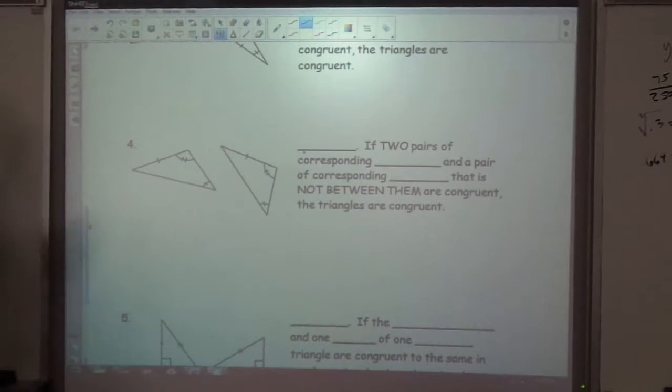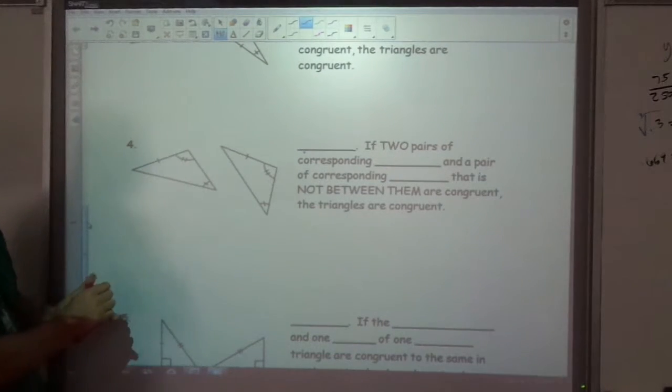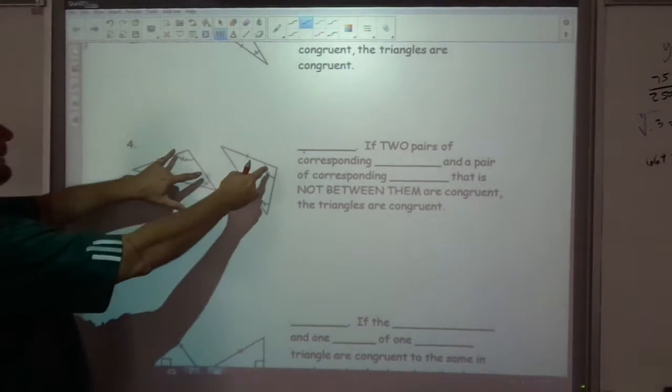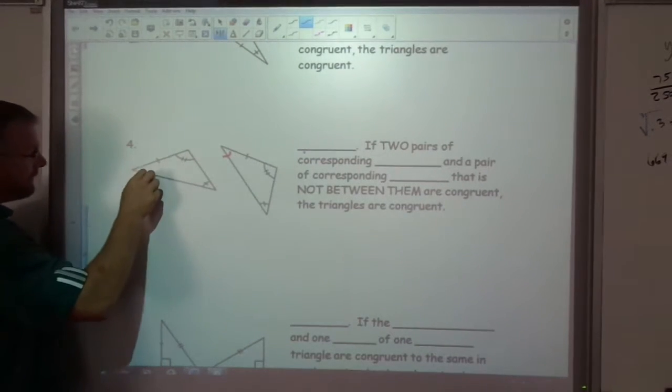The fourth one is where we don't have something on the inside, we actually have one side on the outside. So we've got two angles that are the same and a side over here that's not in between them. This would also still work. Because if these two angles, here's the reason, if these two angles are the same, don't these angles have to be the same also?